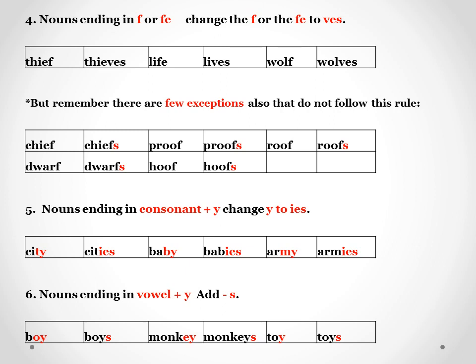Next, you know what vowels are — A, E, I, O, U. Nouns ending in vowel plus Y, we add S. For example, boy — O is a vowel followed by Y — becomes boys. Monkey becomes monkeys. Toy becomes toys. That was easy, right?